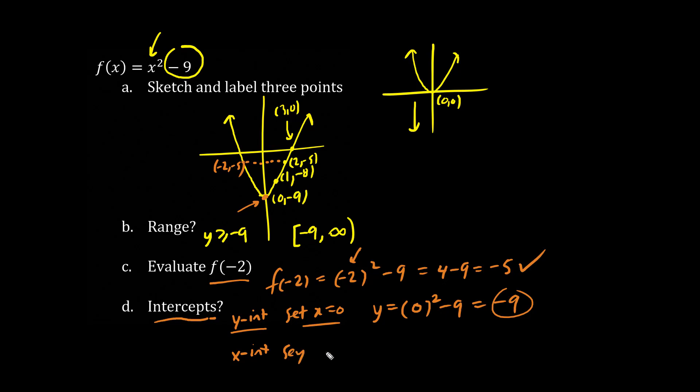Finally, for the x-intercept, we set y equals 0. So we have 0 equals x squared minus 9, that's from up here. Let's add 9 to both sides, so we have 9 equals x squared.